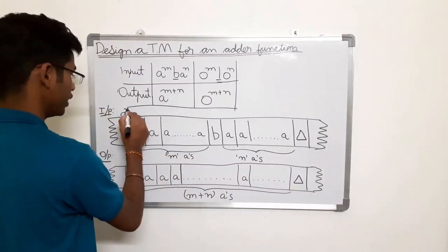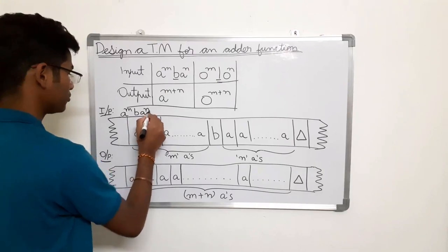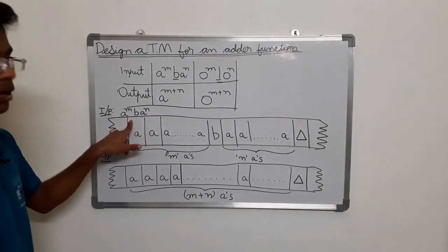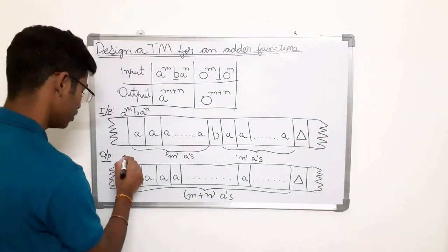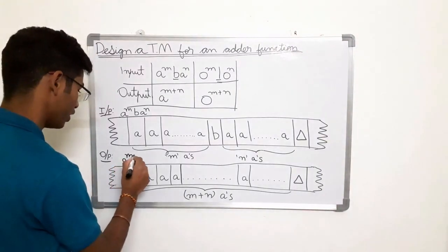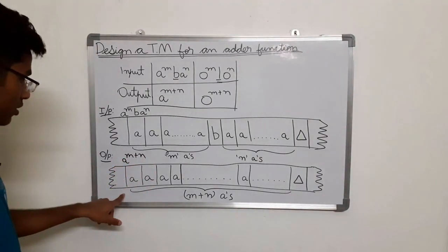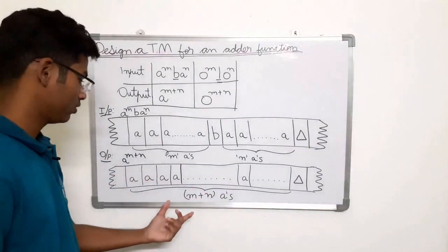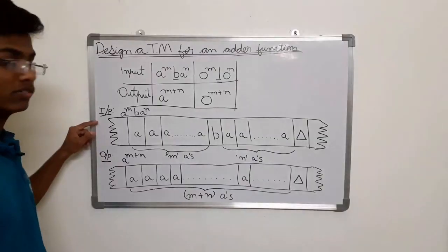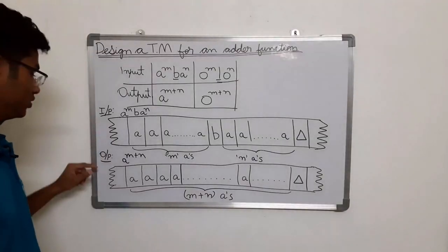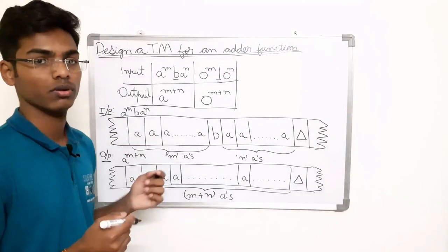If the input is a^m b a^n, then the output should be a^(m+n), which contains m+n a's. If this is the input then this should be the output. Let me draw a Turing machine for this problem.